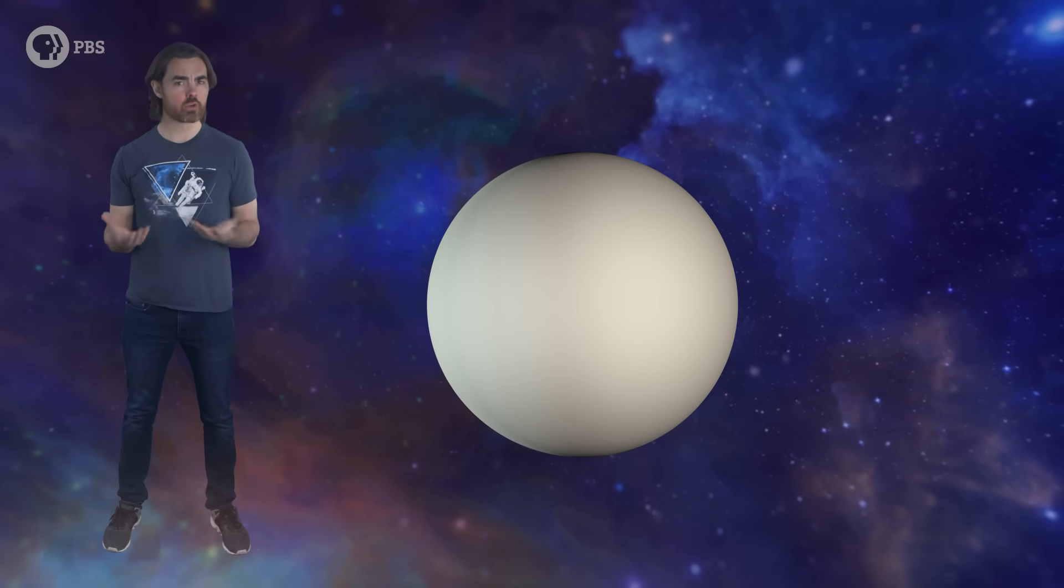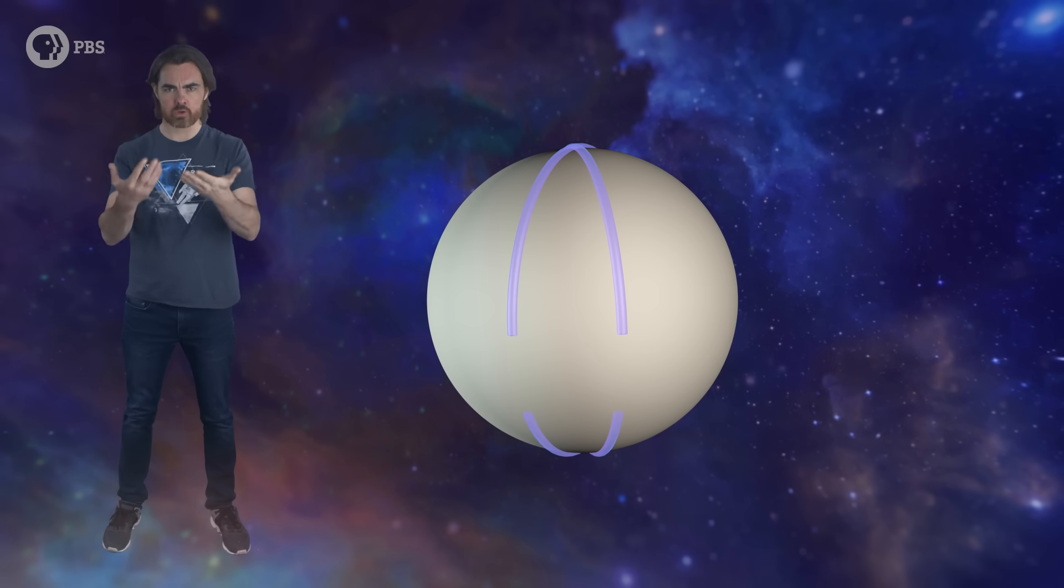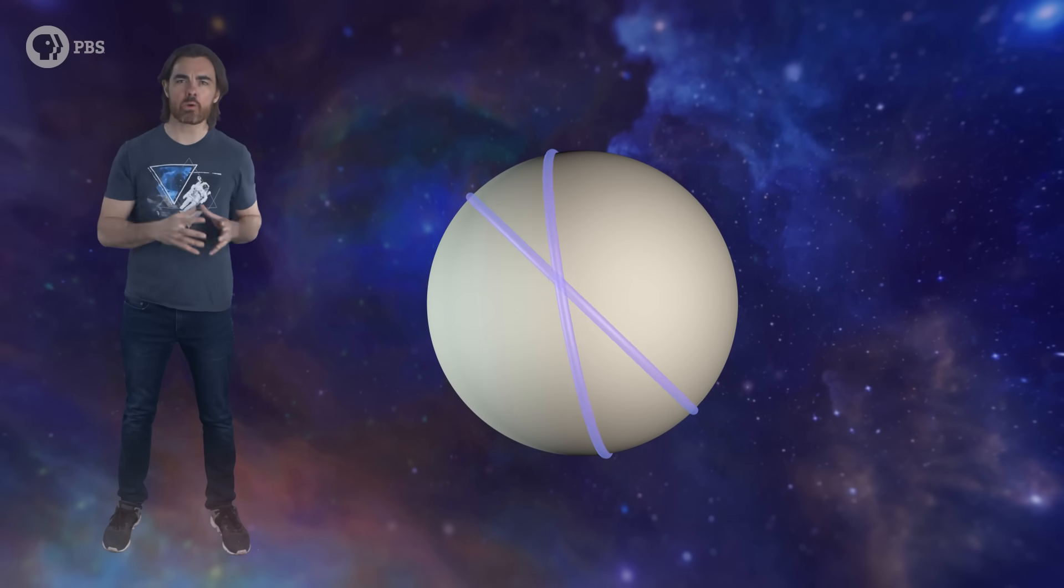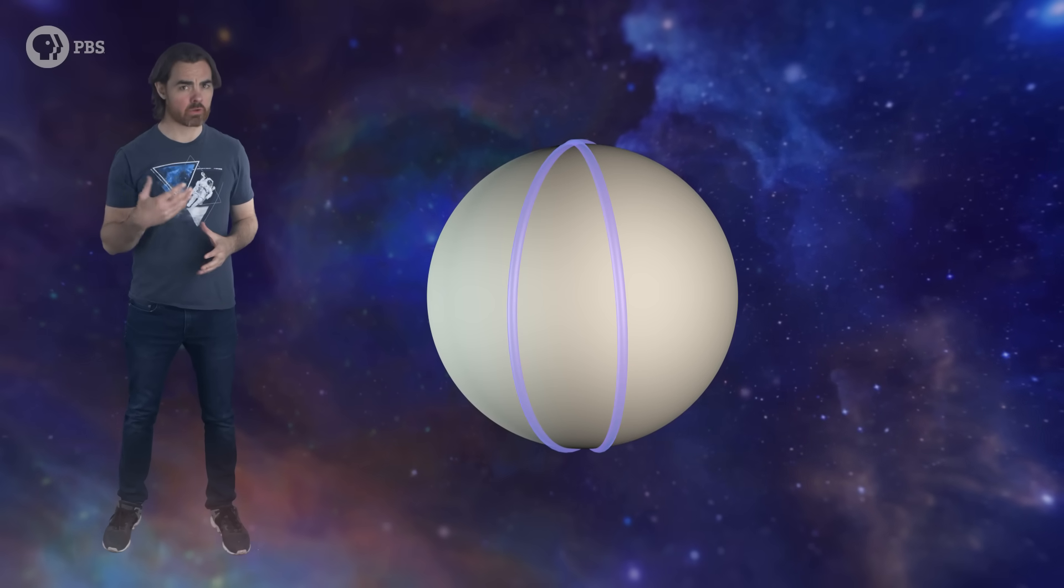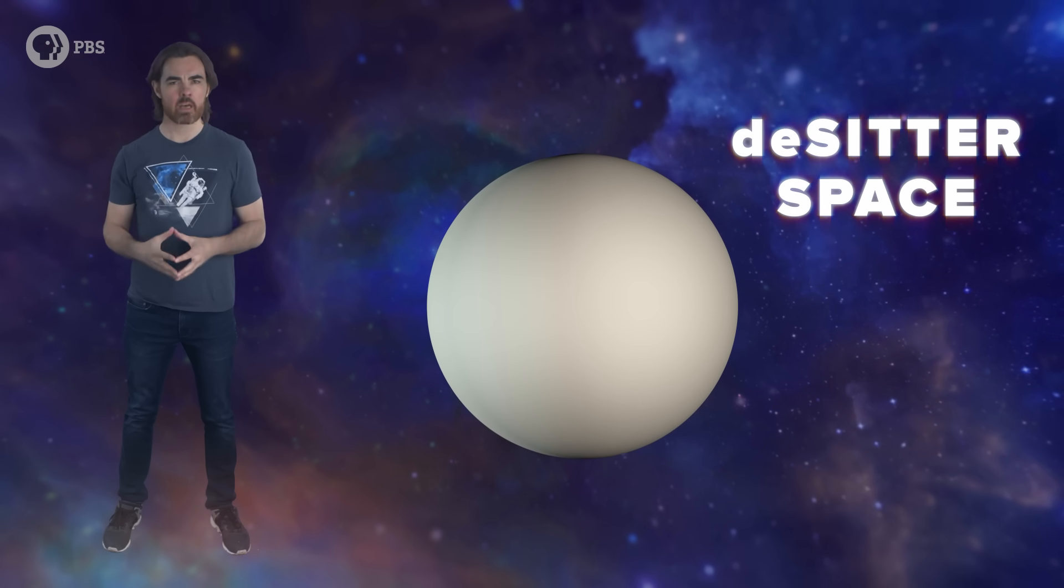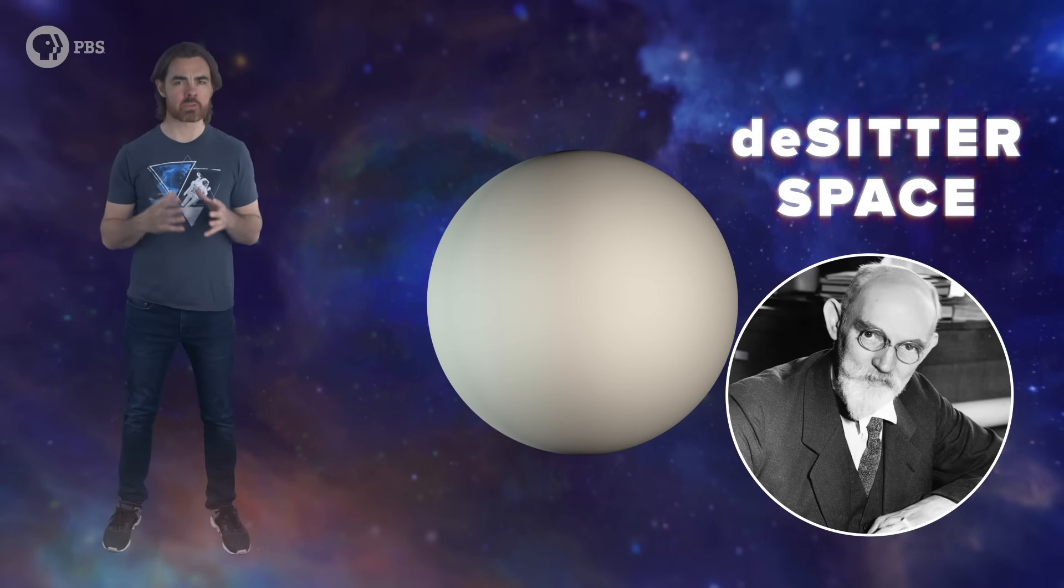Geometry is a bit broken in such a universe – for example, two parallel lines will eventually converge and cross each other. In general relativity, we call a universe with this geometry de Sitter space, after Dutch astronomer Willem de Sitter.